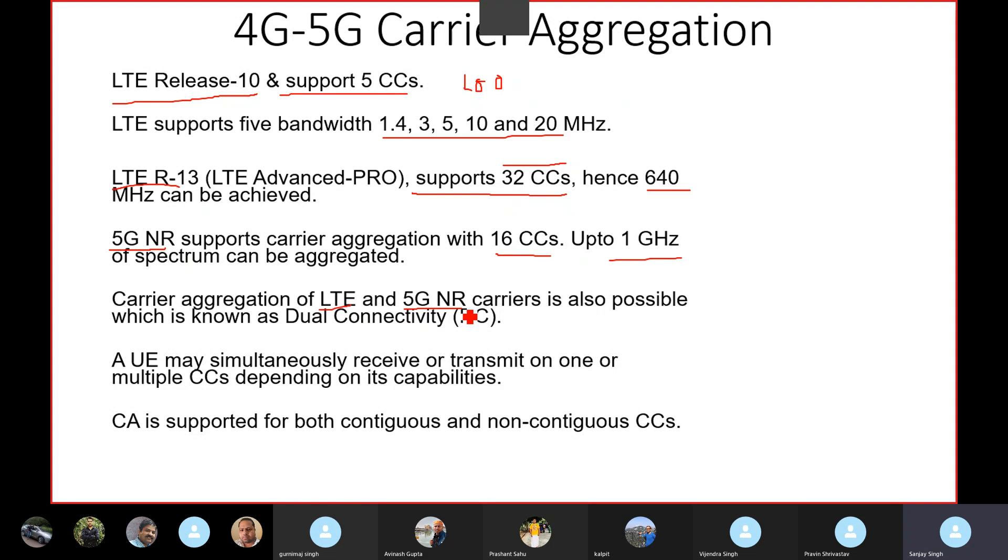In Carrier Aggregation we can aggregate LTE and 5G both carriers. Carrier Aggregation is not only belongs to one technology, it can aggregate different technologies as well but in LTE and 5G only. We cannot do Carrier Aggregation in 2G and 3G. As per my understanding, if anyone has any other understanding, please share.